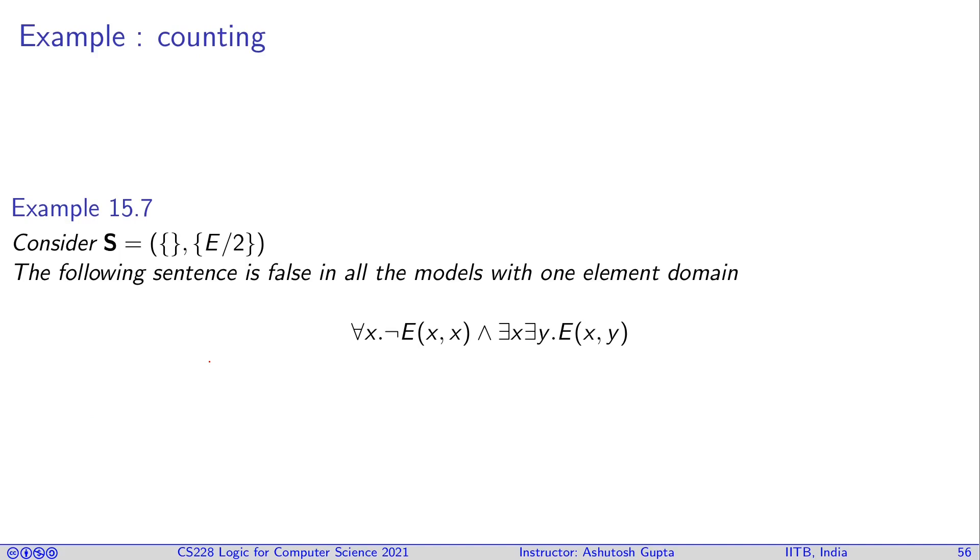Let us suppose we want to write a formula which is always false if your domain has exactly one element. It allows you to have more elements, but cannot be one element. So here is the way you can write this statement. You can say that you cannot have a self loop, so you're not allowed to have a self loop. But there exists an x and y such that you can connect them, so there must be some edge. If there's a single node, how can you have an edge without having a self loop? This is not possible. Therefore, single element domains are disallowed by this formula.